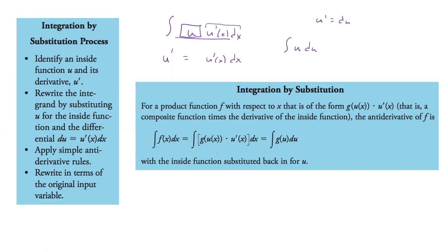This piece goes away and becomes our du part, and this piece is replaced by u. So it's going to be really the integral of u du. For a product function f with respect to x of the form g(u(x)) times u'(x) — a composite function times the derivative of the inside function — the antiderivative gives us the integral of g(u) du. That's the inside-outside function approach.